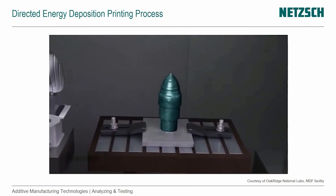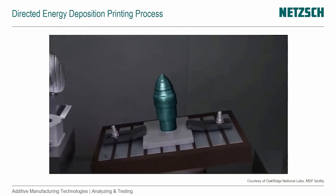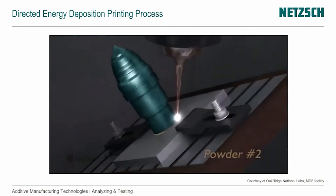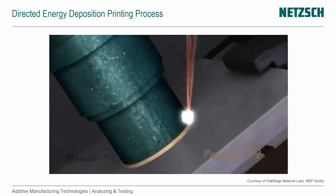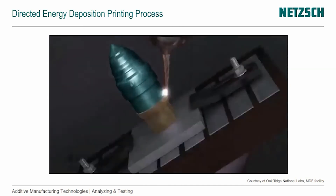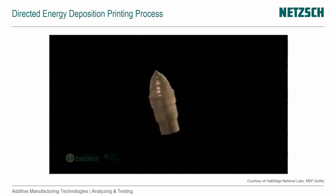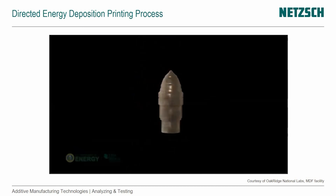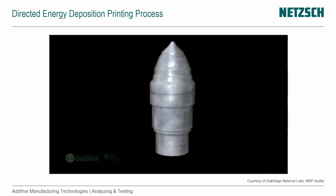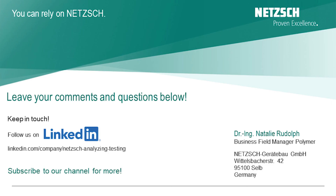Working with one powder material, the build platform is now being tilted, which is also quite typical for direct energy deposition — your build platform is articulated. And for that reason, you don't need support structures.